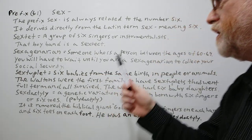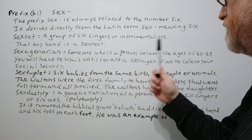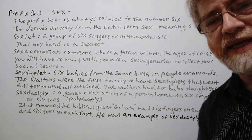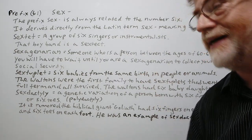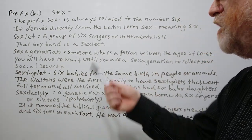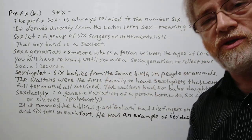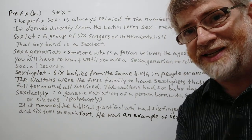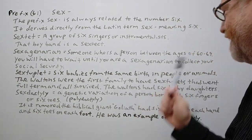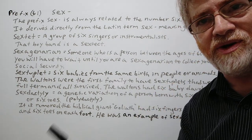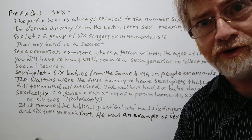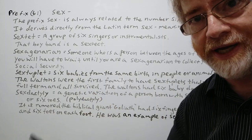The next word is sexagenarian — a person between the ages of 60 and 69. Example: you will have to wait until you are a sexagenarian before you can collect your social security.